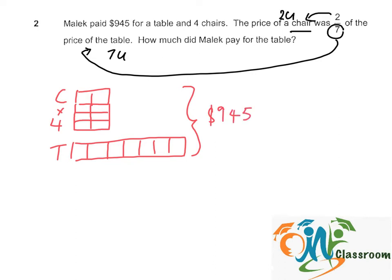So that means 8 plus 7 equals to 15 units. And 15 units cost $945.